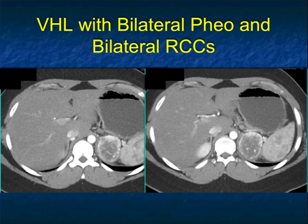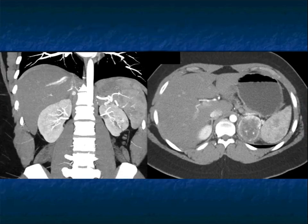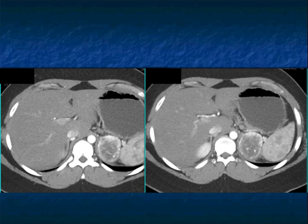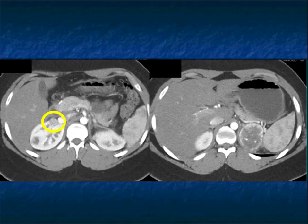Pheos can be bilateral 10% of the time. This was an unusual case with bilateral pheos and bilateral renal cell carcinomas. When you have bilateral pheos, you've got to be thinking syndromes — Von Hippel-Lindau is one of the classic ones. The lesion on the right is 1 centimeter and on the left is 5 centimeters in the adrenal. Multiple renal tumors are present as well. Pheochromocytoma is part of a number of different syndromes including Von Hippel-Lindau, and here you nicely see the renal mass as well as the left adrenal mass.